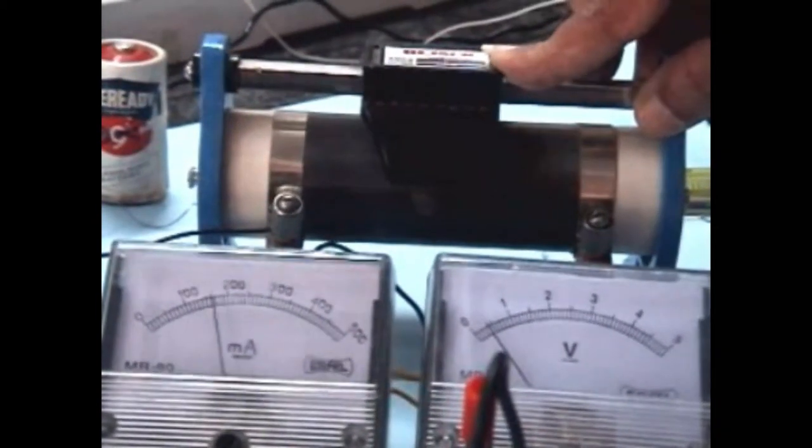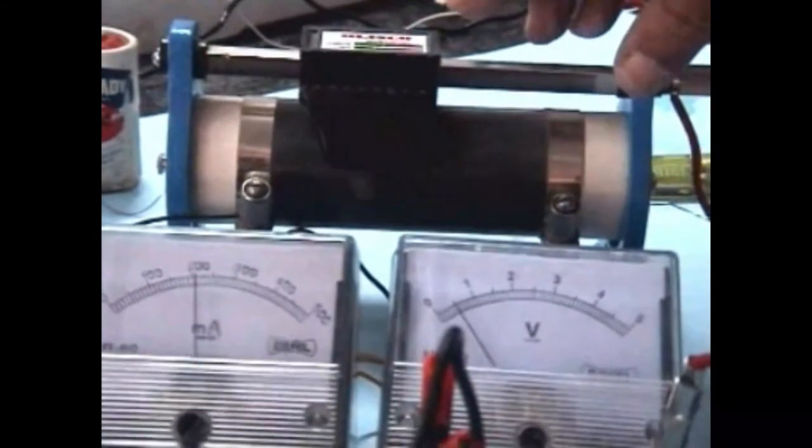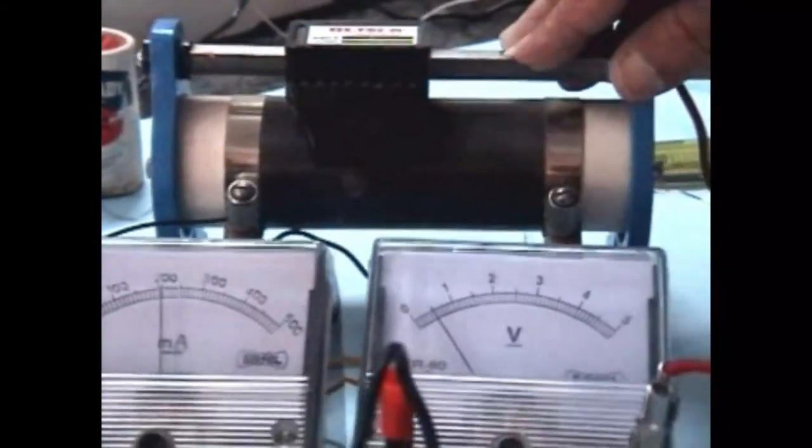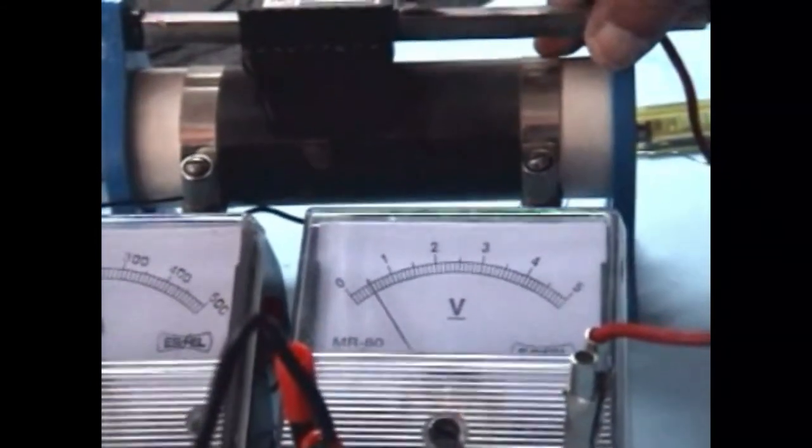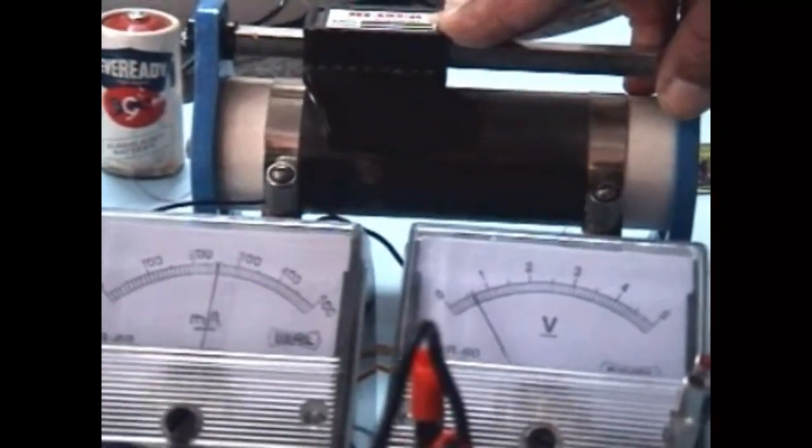Second reading we can observe at 200 milliamperes, which is, the voltage reading is 0.4 volt. Now for 300, it is supposed to be 0.6, let us see whether it is.